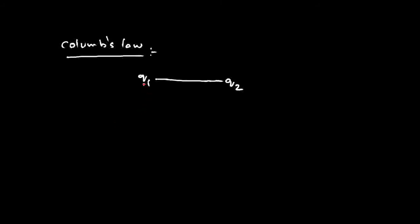When I say point charge, it is a charge of very small magnitude. Say there are two point charges Q1 and Q2, separated by distance r. The force of attraction or repulsion between two point charges is proportional to the product of the charges and inversely proportional to the square of the distance between them.